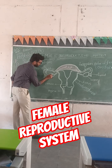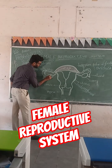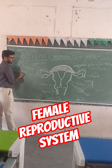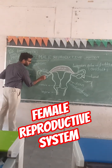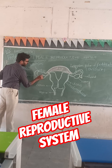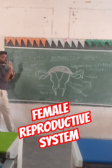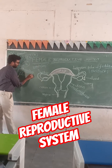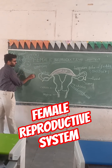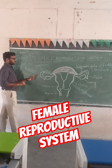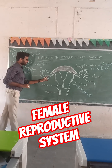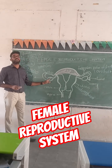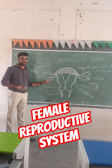Inside of the ovary, we can see small cell-like structures. These are called follicles. These follicles appear as bubble or water bubble-like structures, which is why they are called Graafian follicles. Inside the Graafian follicles only, the ovum will be developed.